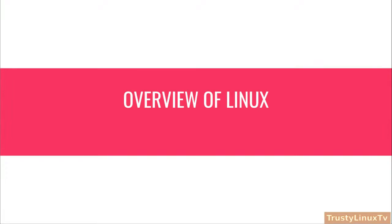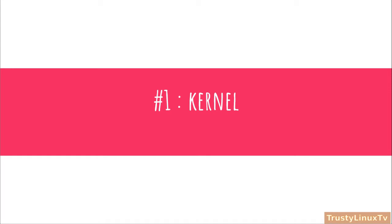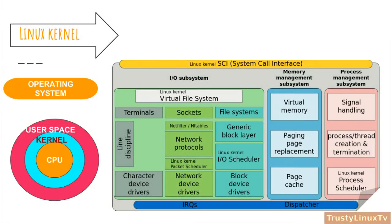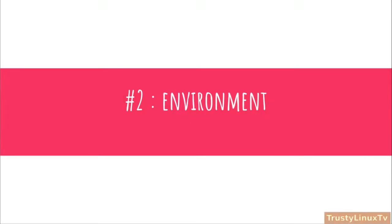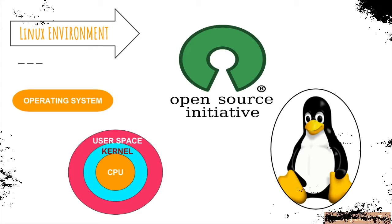Overview of Linux: it can be divided into three main components. Number 1, Kernel — it is the core program that runs all Linux programs on the desktop and PCs and manages hardware devices, such as disks, external drives and printers.